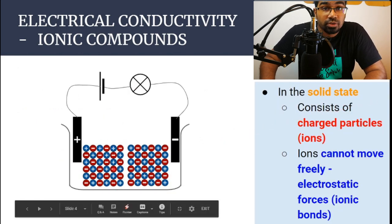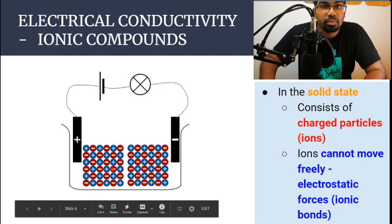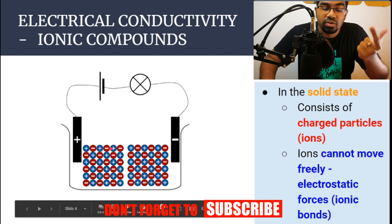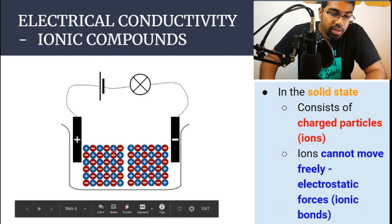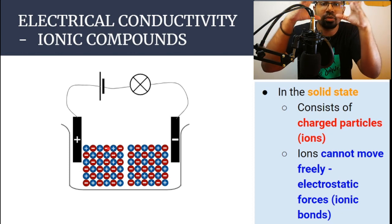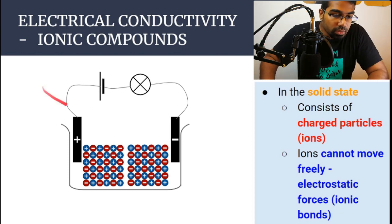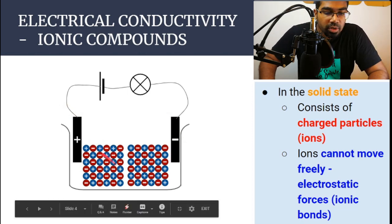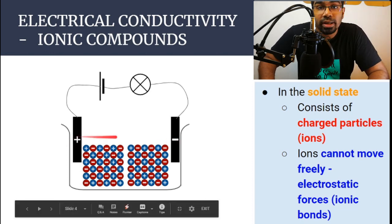Ionic compounds are made of ions — they are charged particles. The positively charged particles are called cations and the negatively charged particles are called anions. When they are in the solid form they are held together in a rigid structure by ionic bonds, which are very strong. So they are not free to move. Even though we apply a potential difference across the ionic compound in the solid state, these ions, although charged, are not able to move, and so it cannot conduct electricity.